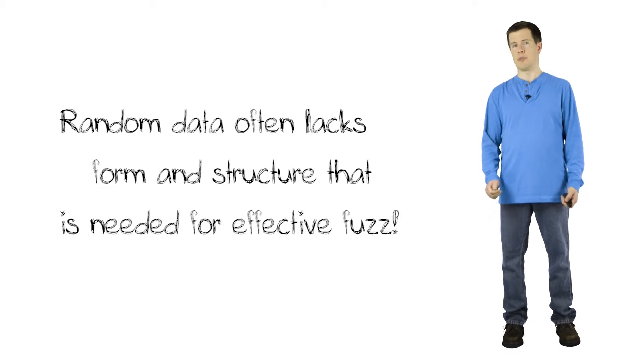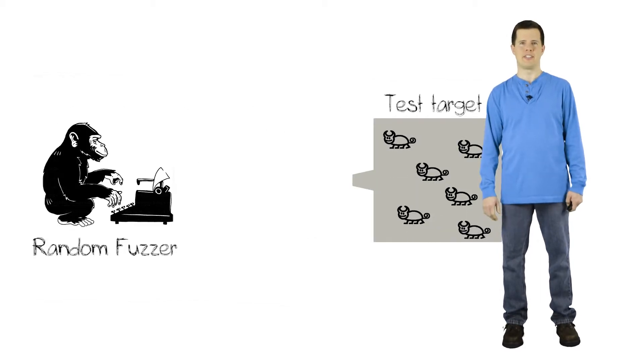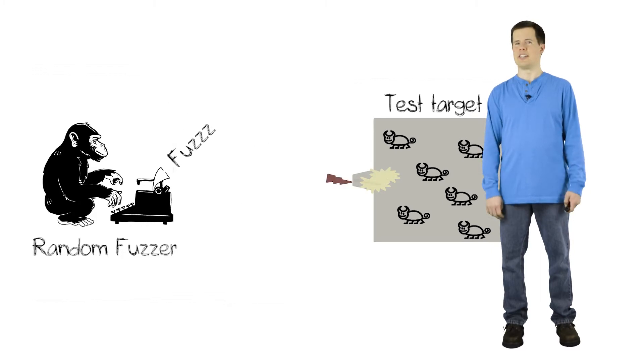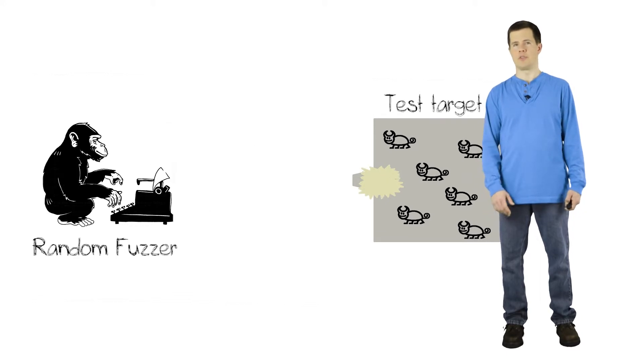So the target will be receiving these random messages and looking at them and almost immediately discarding them because they don't look like anything. So graphically, it looks something like this. If your target is on the right and it's got the bugs hiding inside of it and you're sending these random test cases, they just kind of bounce off the entry point of that software because they just get discarded right away.